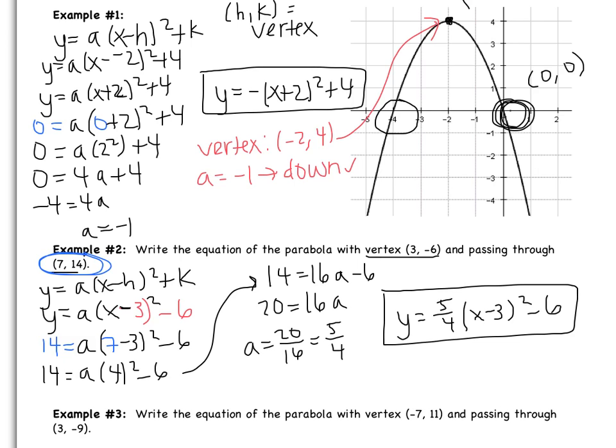So again, this shows me that my vertex is (3, negative 6), which matches. And then positive a, the parabola is opening up. Remember that that (7, 14) was only to help us find a. And then once we find a, we're done with it.